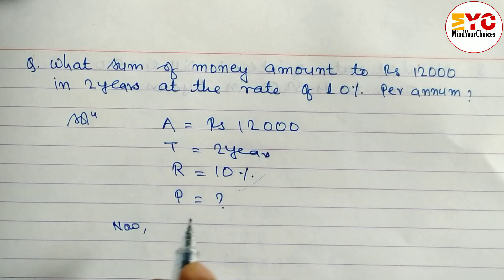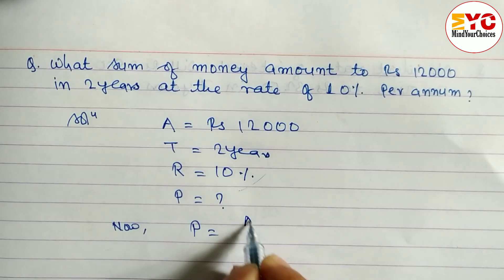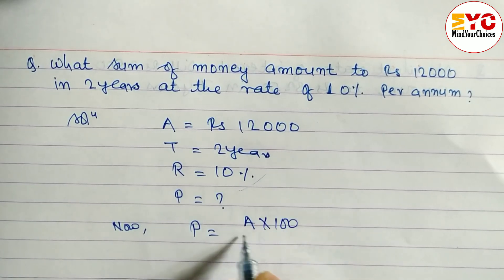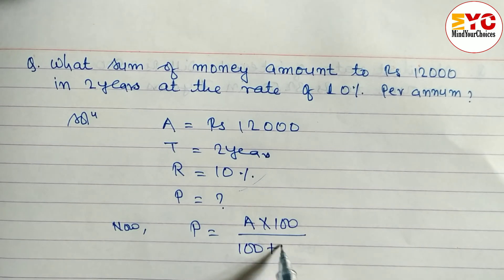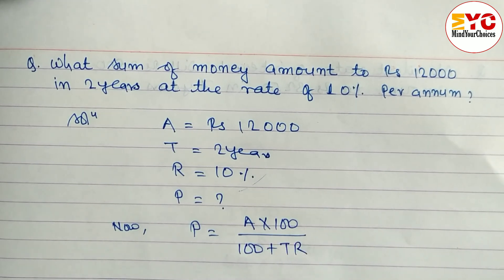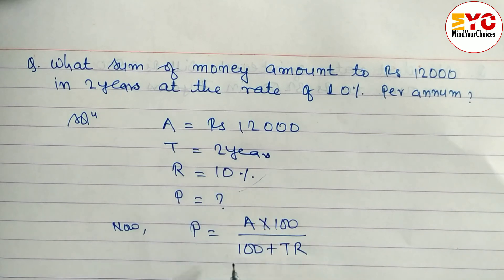After that, we have to use the formula of principle which is in the form of amount. P is equal to A into 100 by 100 plus TR. This is the formula. So what is the value of A?